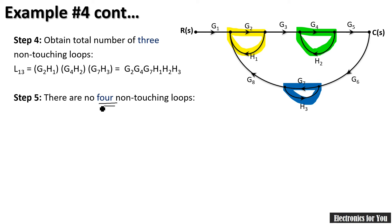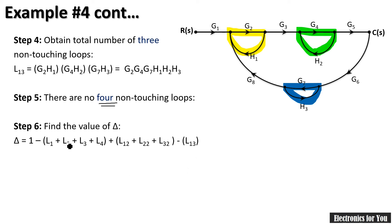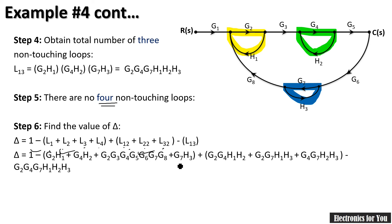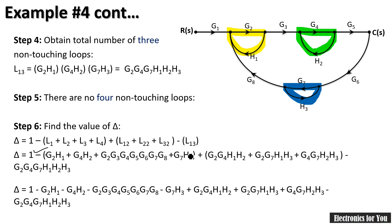Step number 6 is to find delta using the formula: delta = 1 − (sum of single loops) + (sum of two-loop pairs) − (sum of three-loop pairs) + ... Substituting the values of L1, L2, L3, L4, L12, L22, L32, and L13 and applying the sign changes — single loop terms become negative, two-loop pair terms become positive, three-loop pair terms become negative — we obtain the value of delta.